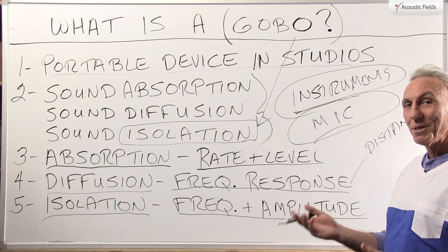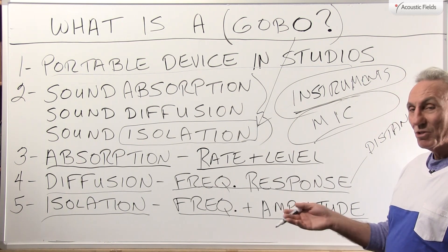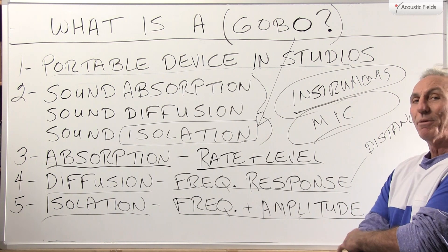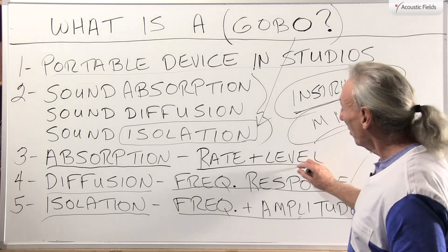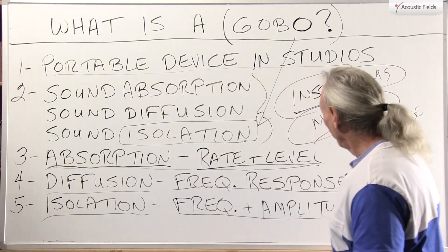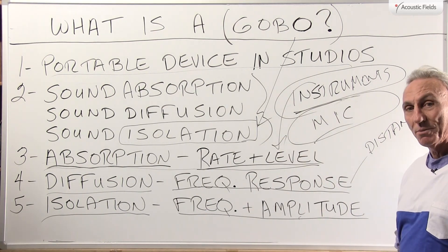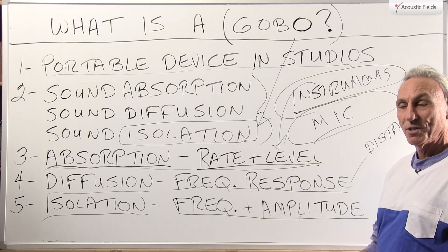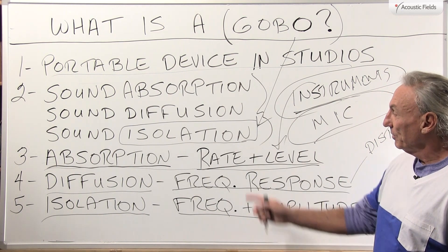I see some made out of foam, I see some that are really thick and heavy — you just don't really know what's going on, and I'm wondering if the people that design them do too. So if it's going to be an absorption device we have to first figure out what kind of absorption we're doing: instruments, voice — what's the sound source that we're trying to absorb from?